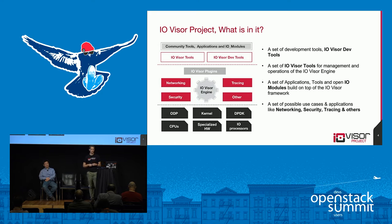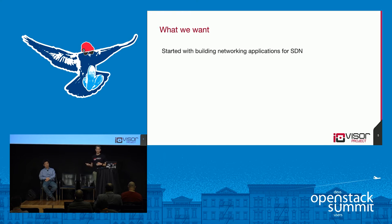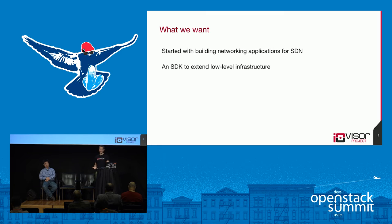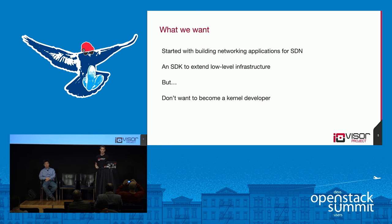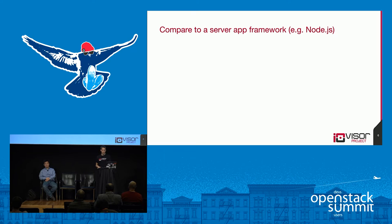IOVisor covers everything from tracing and security to networking. The goal is to use these tools to develop new infrastructure applications. We started by building networking applications — one of the original use cases for software-defined networking. We wanted an SDK to extend this low-level infrastructure for processing packets, but we didn't want everyone to need to become a kernel developer to do that, which is kind of the status quo within Linux.